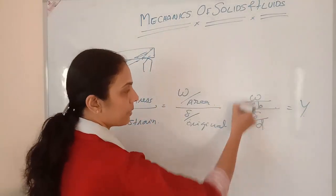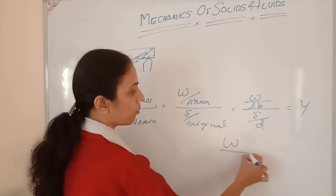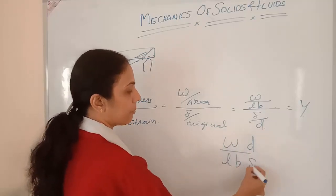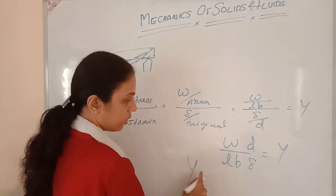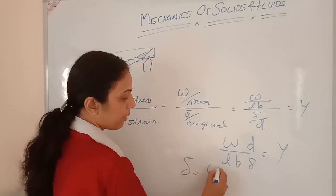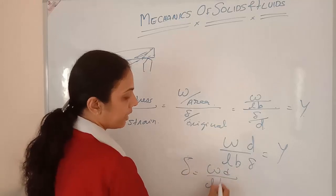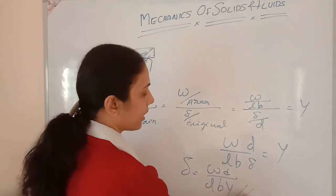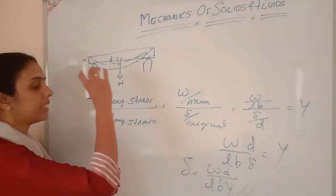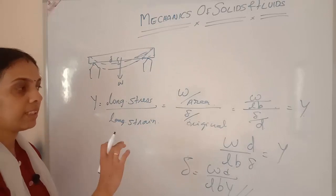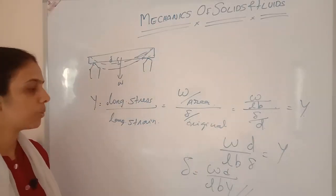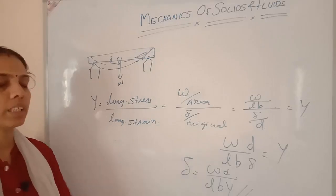Rearranging, delta equals WD divided by (L × B × Y). This is how we find the sagging. The original depth was D, and after the load is applied, it sags by an amount delta, so delta = WD / (LBY).